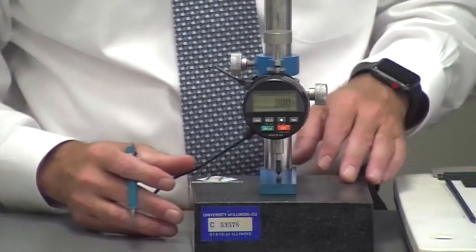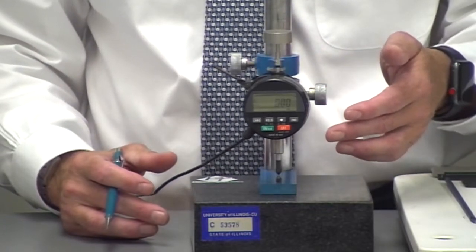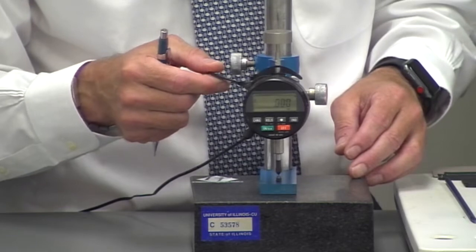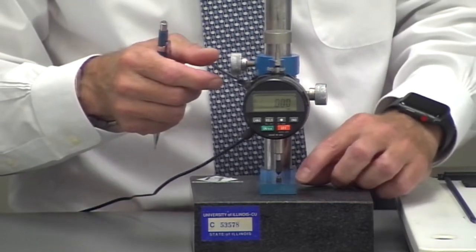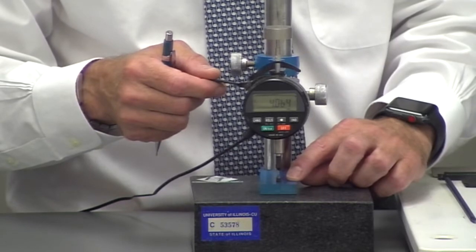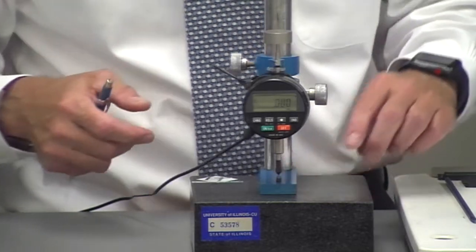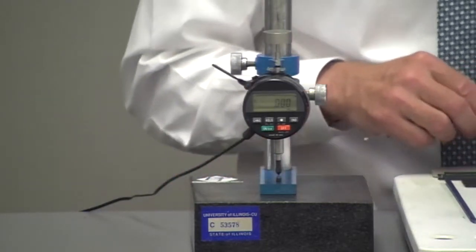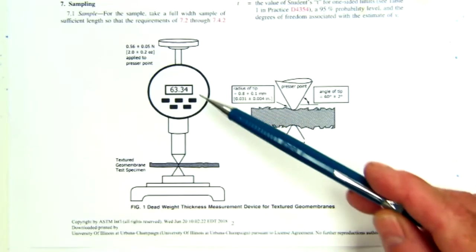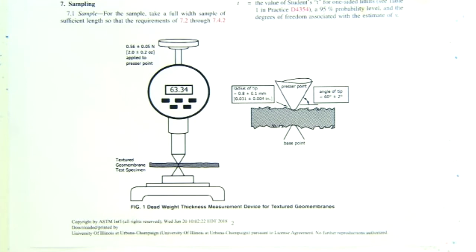The apparatus to measure the thickness is shown here. It's a digital dial gauge with a spring-loaded point. For textured materials, there are two points — one on top of the geomembrane and one on the bottom — as illustrated in the sketch in the ASTM test method. The digital dial gauge is zeroed before the test.